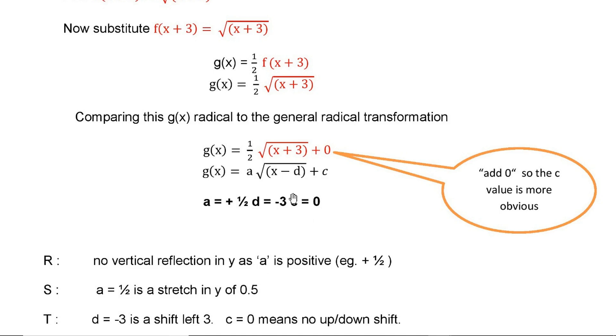Then we come to d. d is -3 here, so d is shift left. c is 0, that means no up or down shift.